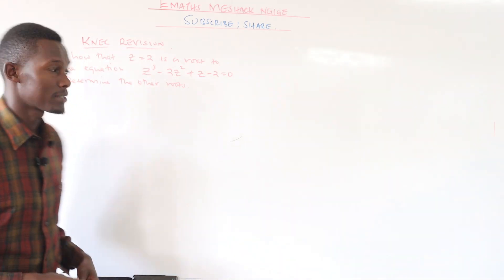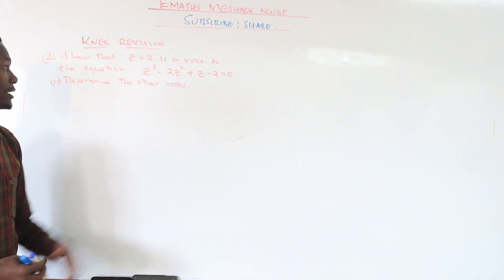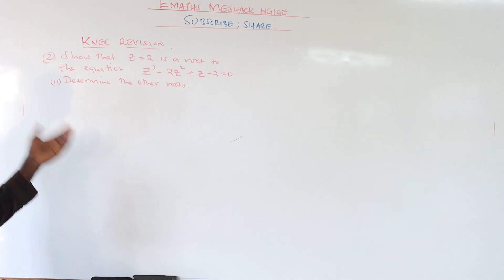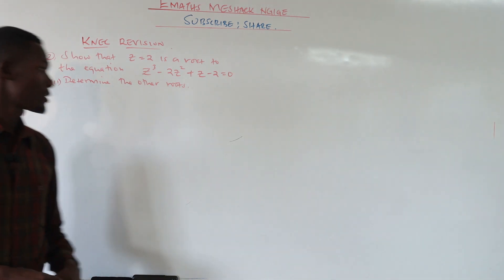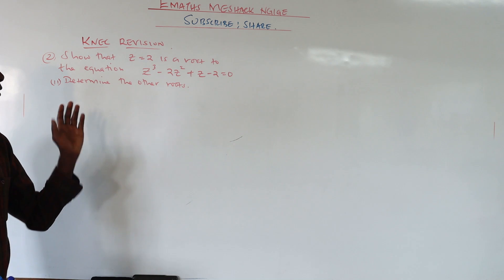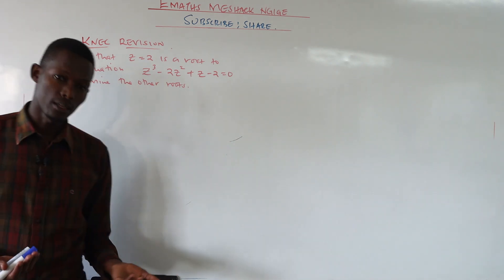We're going to check the second example here from my Neck Pass paper. It says show that z equals 2 is the root to the equation z cubed minus 2z squared plus z minus 2 equals 0. Then determine the other roots.